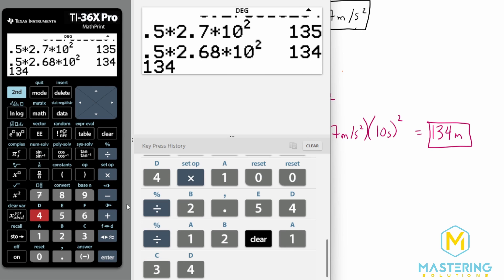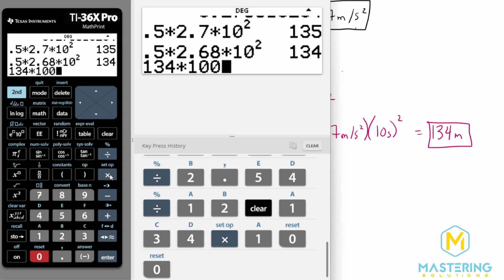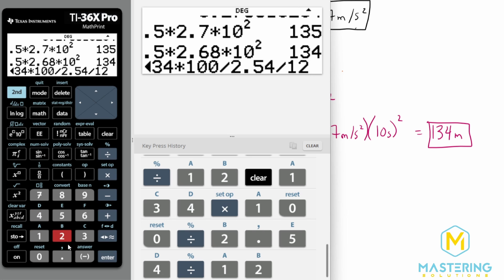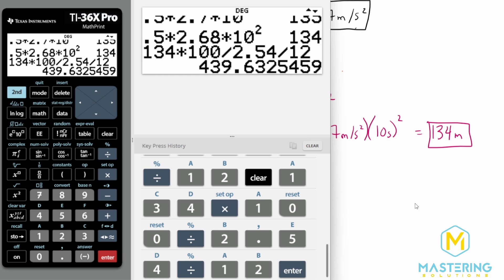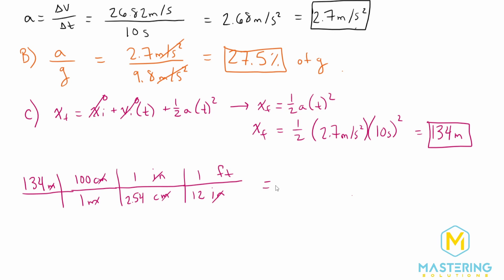So we have 134 meters, multiply that by 100 to go from meters to centimeters. Now we're going to divide by 2.54 to go from centimeters to inches, and then divide by 12 to go from inches to feet, which is what we wanted. That gives us 439.6 or 440. So now we know the distance that the car went in those 10 seconds, not only in feet, but also in meters for SI units.